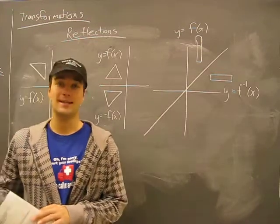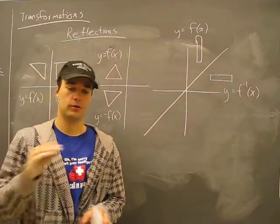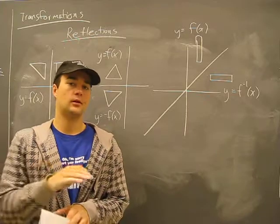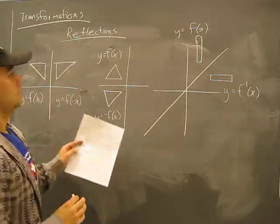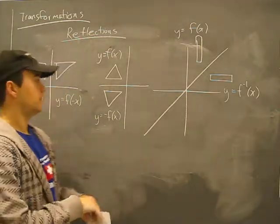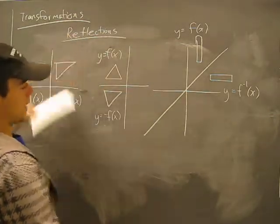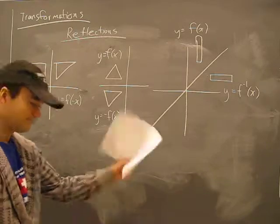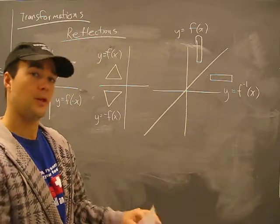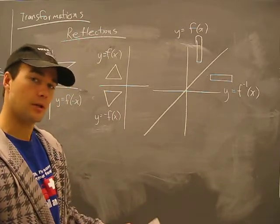Remember, in translations, like vertical or horizontal, it didn't matter if we did it up or down or left or right. Reflections are the same way. It doesn't matter if you reflect something this way and then that way or that way and then this way. Within reflections, you'll get the same result.